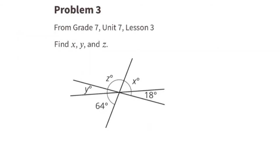Problem number 3 from 7th grade, Unit 7, Lesson 3. Find X, Y, and Z. That means they want us to find the missing measure for angles X, Y, and Z.